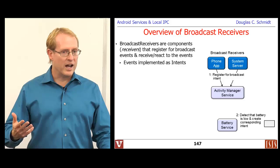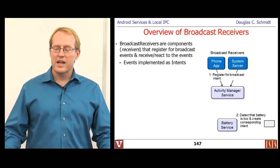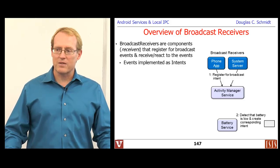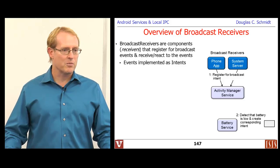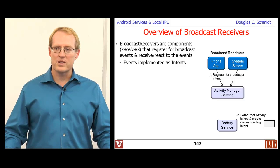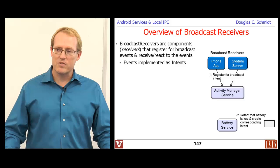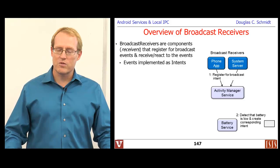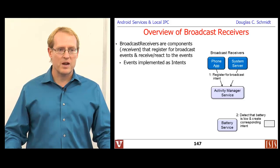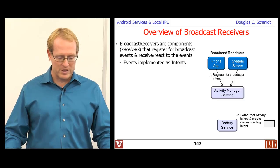Think of an intent as a data structure that keeps track of several pieces of information: the action you want to have performed — like launching an application — some data associated with that particular occurrence, such as a path name or a URI, and other kinds of information like categories that can be used for various purposes by the Android filtering system.